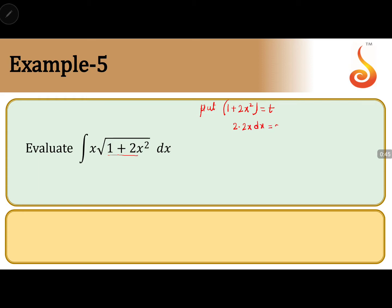Now in the question what we want actually we want only x dx. Therefore x dx is dt divided by 4.